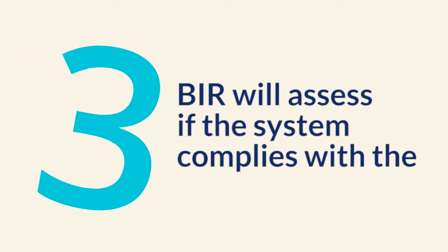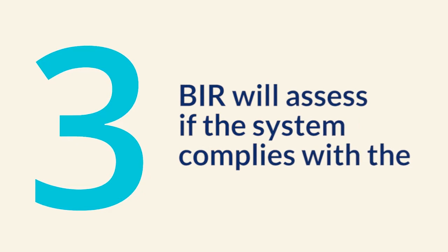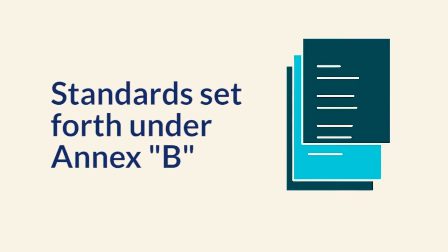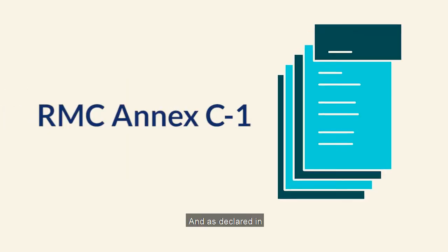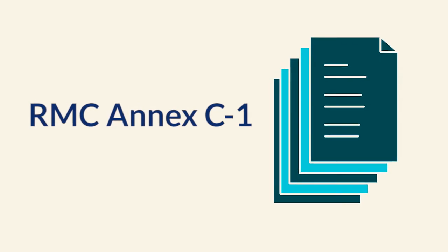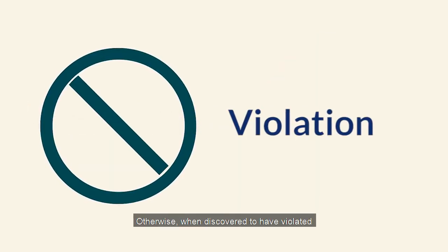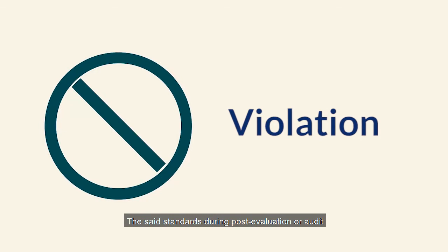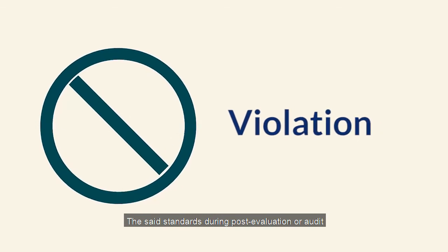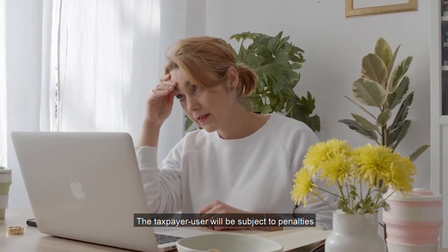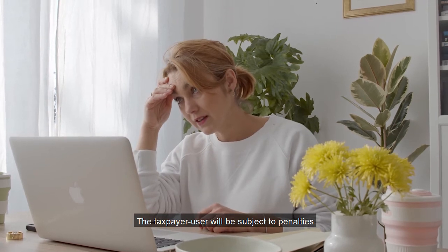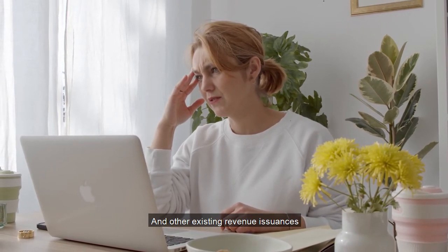BIR will assess if the system complies with the standards set forth under Annex B and as declared in RMC Annex C-1. Otherwise, when discovered to have violated the said standards during post-evaluation or audit, the taxpayer user will be subject to penalties provided under RMO No. 7-2015 and other existing revenue issuances.